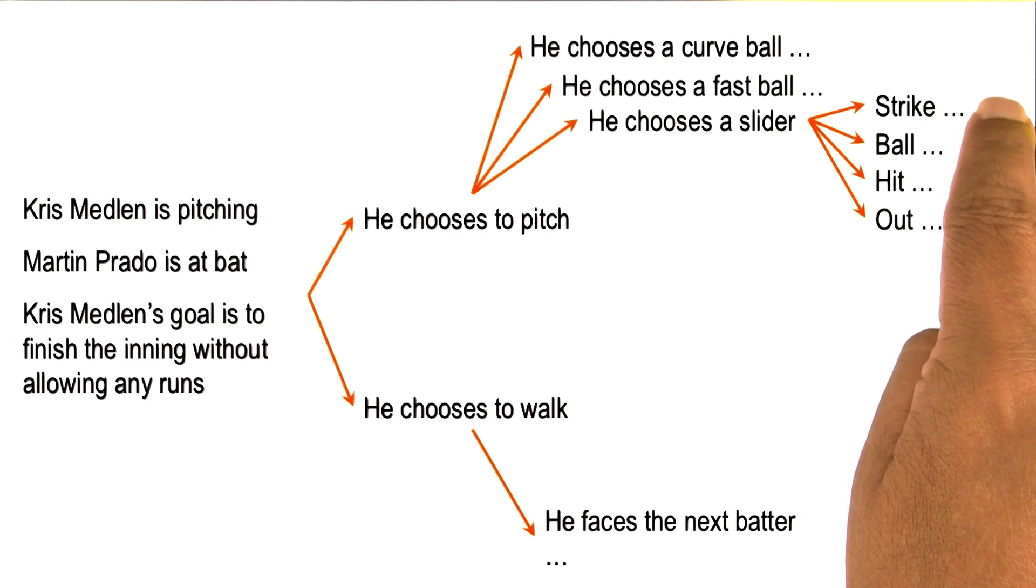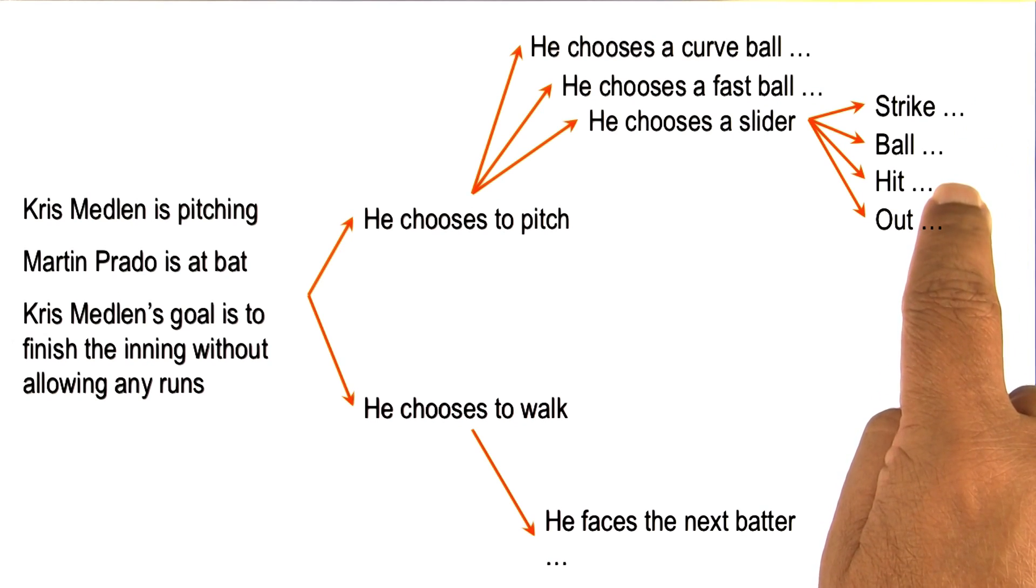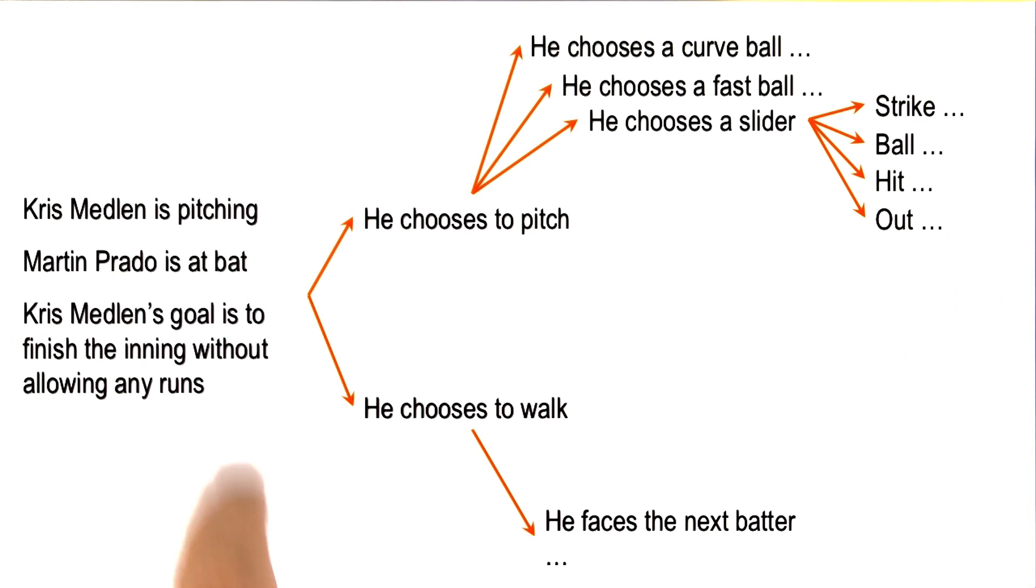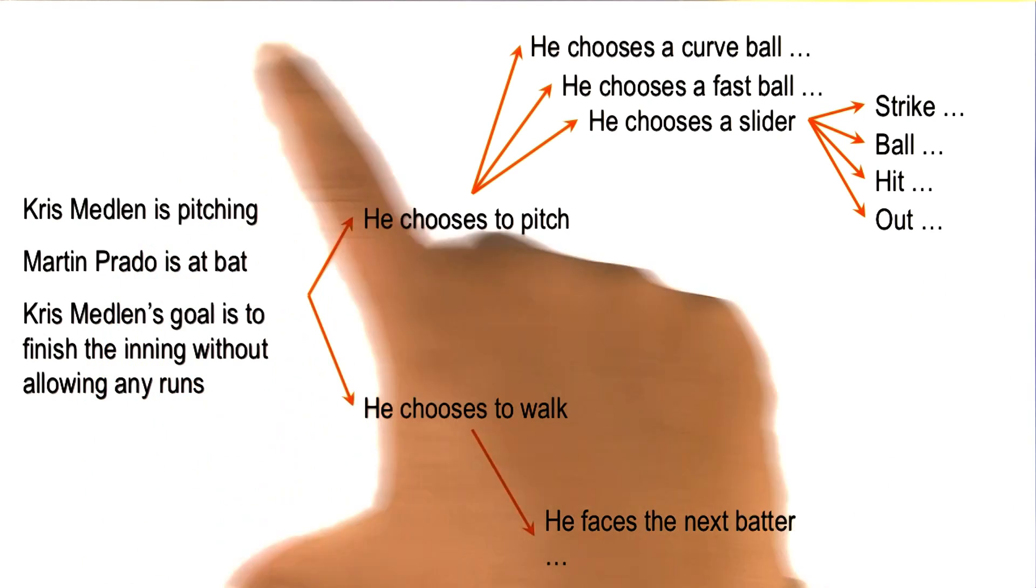There might be a strike, or a ball, or a hit, or he may just strike the batter out. Thus, Medlin is setting up a state space.